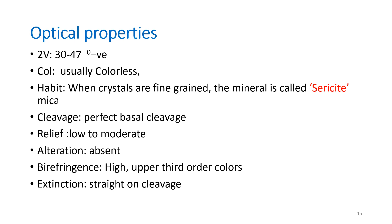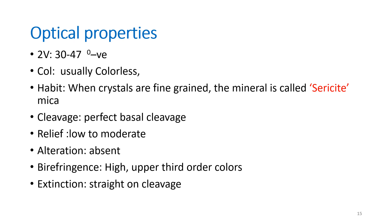Muscovite optical properties: the 2V optic axial angle is 30 to 47 degrees; it is optically negative; usually colorless. Fine-grained crystals exhibit the sericite habit. Cleavage is perfect basal cleavage; relief is low to moderate; birefringence shows high upper third-order colors; and extinction is straight on the cleavage.